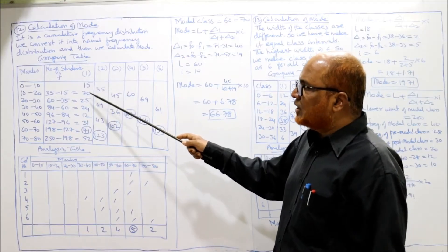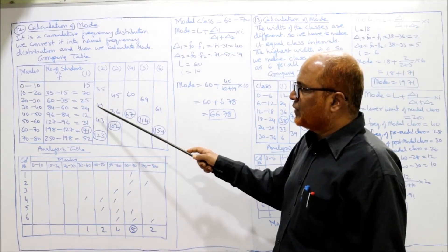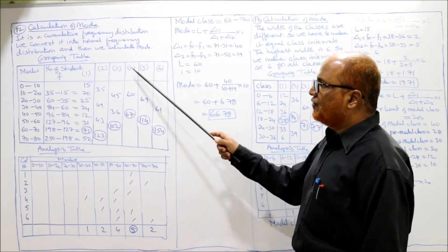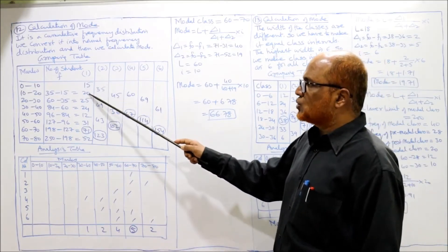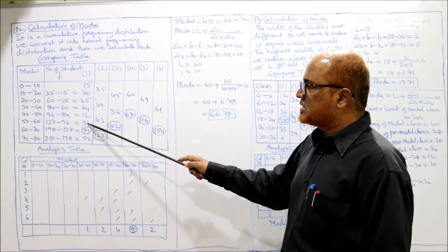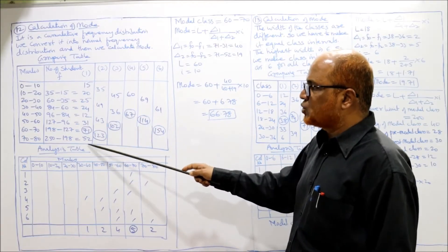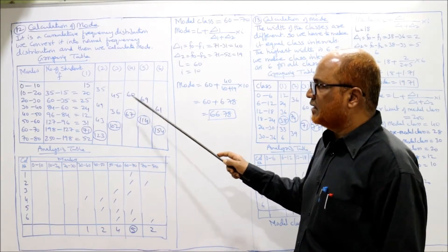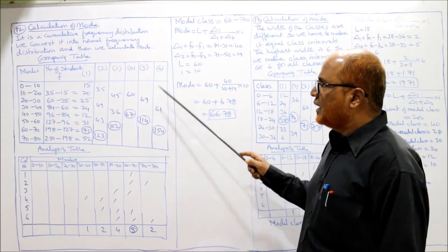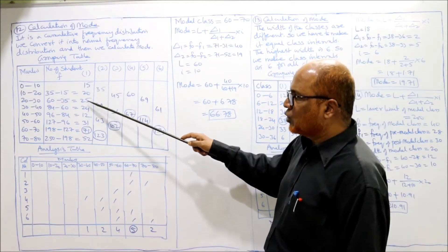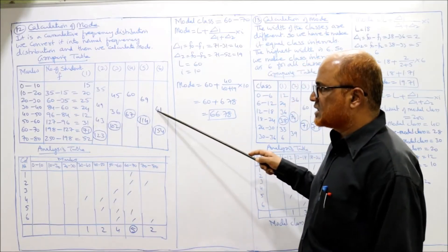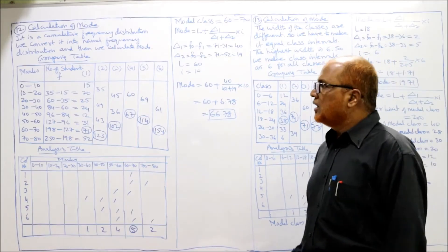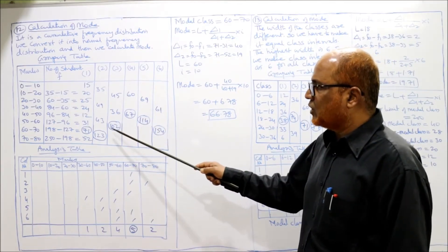Third column: leave the first, then group in twos — 20+25=45, 24+12=36, 31+71=102, leave last one. Fourth column: group in threes — 15+20+25=60, 24+12+31=67, leave last two. Fifth column: leave the first, then group in threes — 20+25+24=69, 12+31+71=114, leave last. Last column: leave the first two, then group in threes — 25+24+12=61, 31+71+52=154. Grouping table finished.